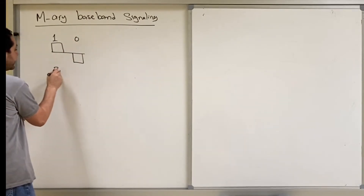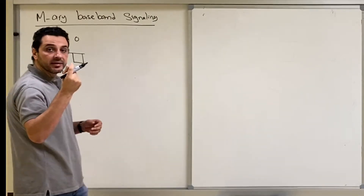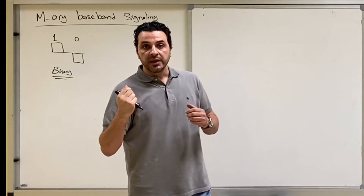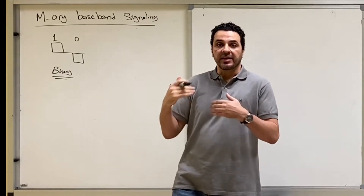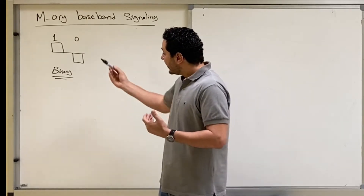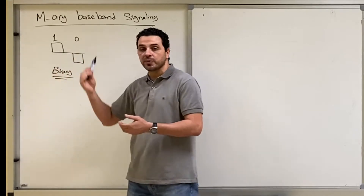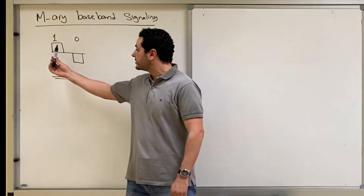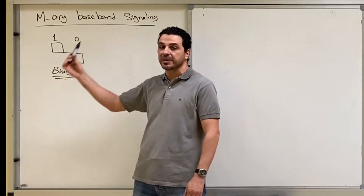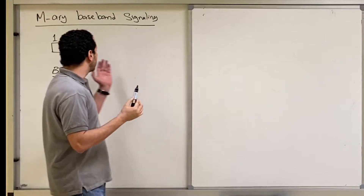This is what we call binary. The word 'bi' means double — two. Here we are going to discuss another level of transmission called M-ary. In the binary case, the transmitter and receiver agree on two pulses. If I transmit this pulse, the receiver understands it as binary 1. If I transmit this pulse, the receiver understands it as binary 0.